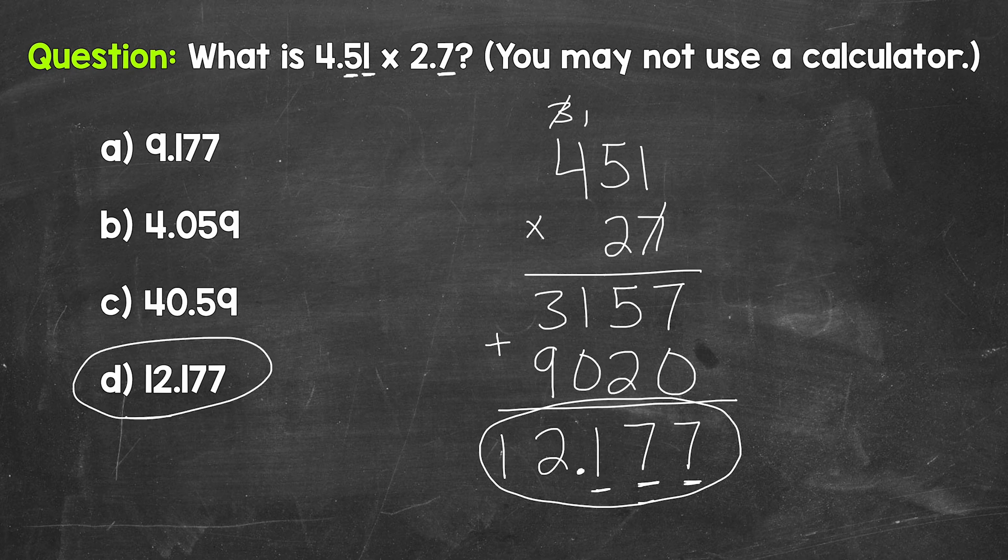And that's our final answer. Now to recap, whenever we have a multiplication problem involving any decimals, our first step, remove any decimals. Our second step, multiply. And then lastly, our third step, we place the decimal in our answer.